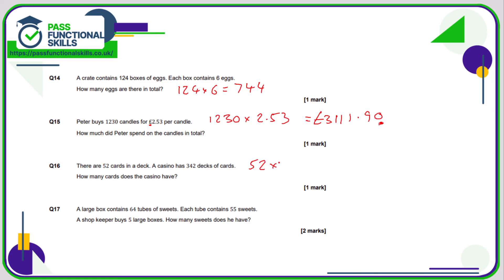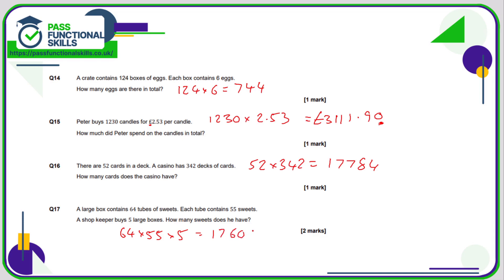Question 16: 52 times 342 — hit equals and you get 17,784. For the final question, the calculation is 64 times 53 times 5, which you can do as one calculation, or you can do 64 times 53 first and then multiply that result by 5. Either way, you should get the final answer of 17,600 sweets.